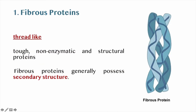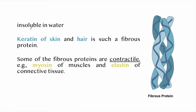Fibrous proteins are thread-like proteins which occur singly or in groups. They are tough, non-enzymatic, and structural proteins that form structures. Fibrous proteins generally possess secondary structure and are insoluble in water. Examples are keratin of skin and hair. Some fibrous proteins are contractile in nature — for example, myosin protein of muscles and elastin of connective tissue.